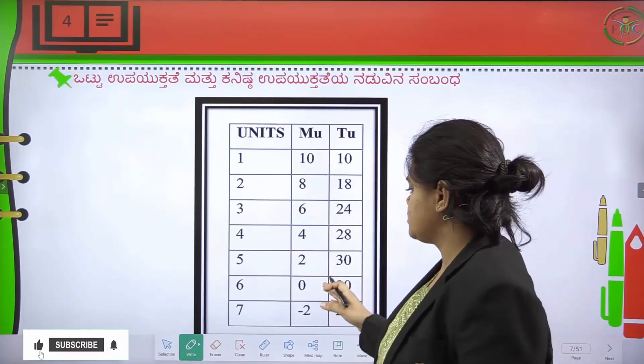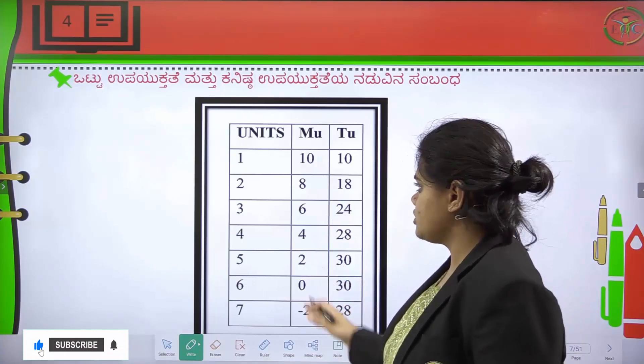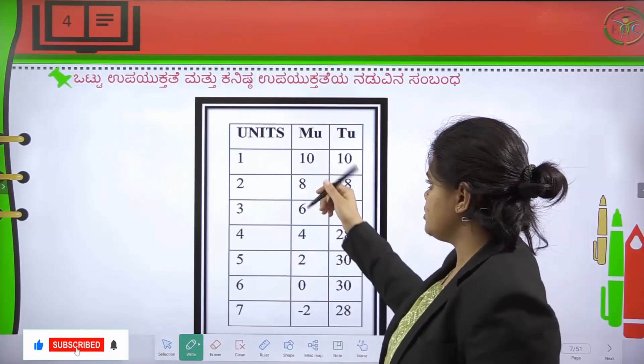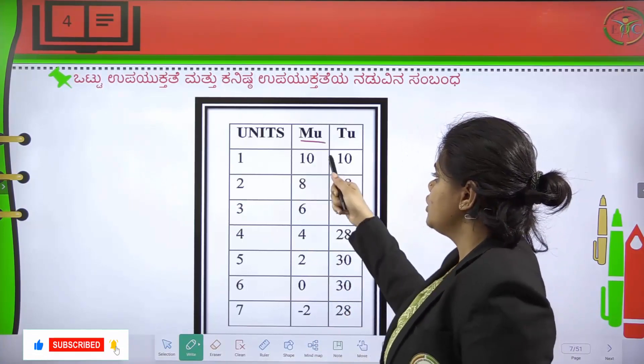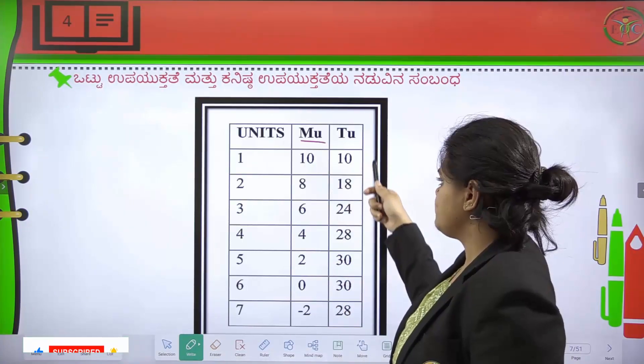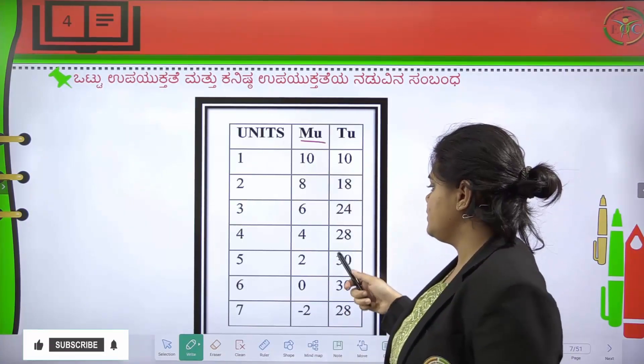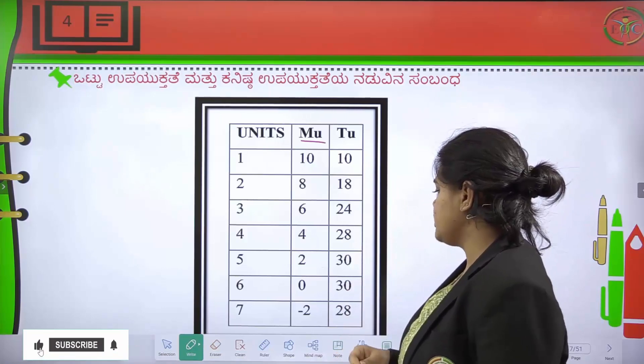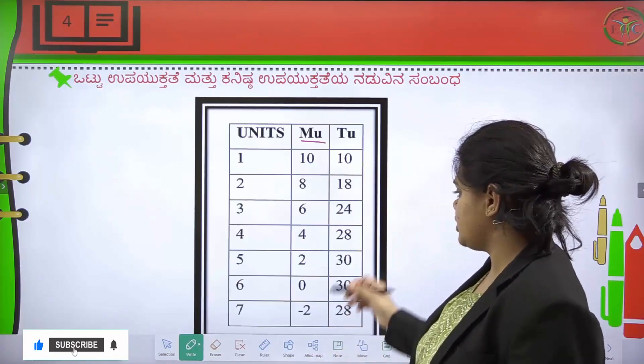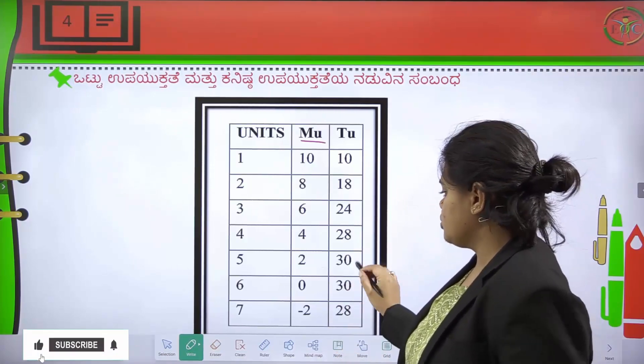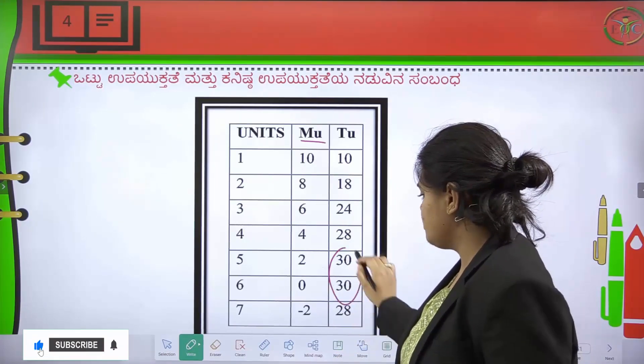The marginal utility values are: 10, 8, 6, 4, 2, 0, minus 2. The corresponding total utility values are: 10, 18, 24, 28, 30, 30, 28. At one point in time you reach maximum, then it begins to decrease.